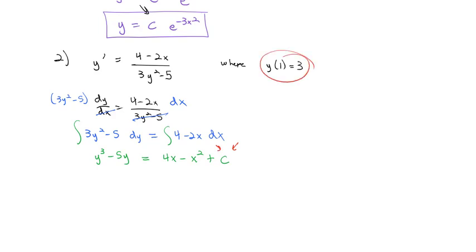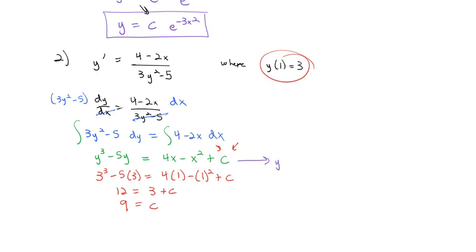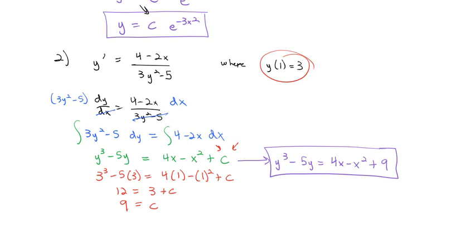Now we can figure out what that constant is using our initial values. When x is 1, y is 3. So: 3 cubed minus 5 times 3 equals 4 times 1 minus 1 squared plus c. Well, 3 cubed is 27; 27 minus 15 is 12. And 4 minus 1 is 3. So when I subtract 3 from both sides, I see c equals 9. So I can rewrite the final answer as y cubed minus 5y equals 4x minus x squared plus 9. By having an initial value, I was able to figure out what that constant had to be in my equation.